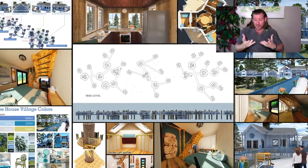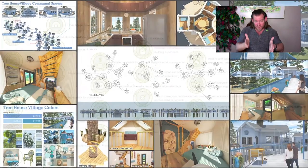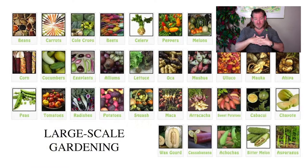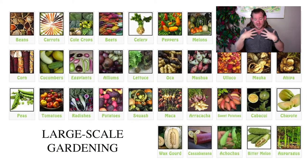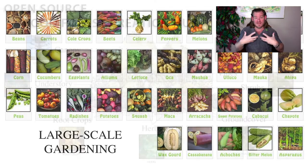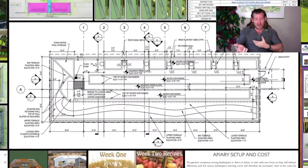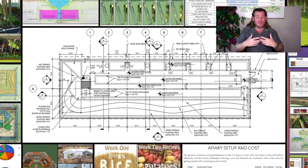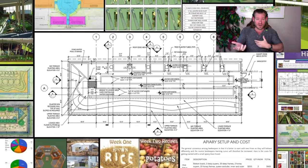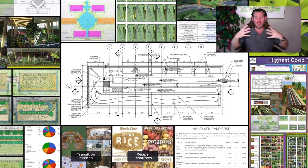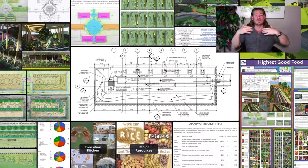The One Community model of open sourcing and free sharing everything means that the more fun we're having and the more we're enjoying our experience, the more we share that experience, and the more successful One Community will be. The model is not only designed to provide this amazing living experience — it actually thrives more, the more we share our abundance, the more abundant we will be. Open sourcing and free sharing creates a global cooperative and collaborative of organizations doing this, providing even more variety for people who want to travel and have these types of experiences.